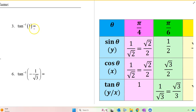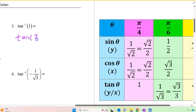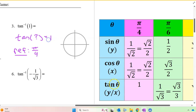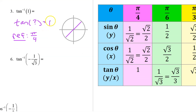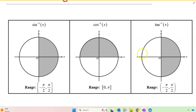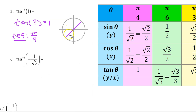To evaluate the arc tangent of 1, you should be thinking: the tangent of what angle is equal to 1? We have memorized that the tangent of π/4 is equal to 1, so π/4 is the reference angle. In this case, we want tangent to be positive, and tangent is the slope of the terminal side. The terminal side will have a positive slope in quadrants 1 and 3. However, the values of arc tangent are restricted to quadrants 1 and 4, between -π/2 and +π/2. This narrows it down to only the first quadrant, and the angle in the first quadrant with a reference angle of π/4 is π/4 itself.